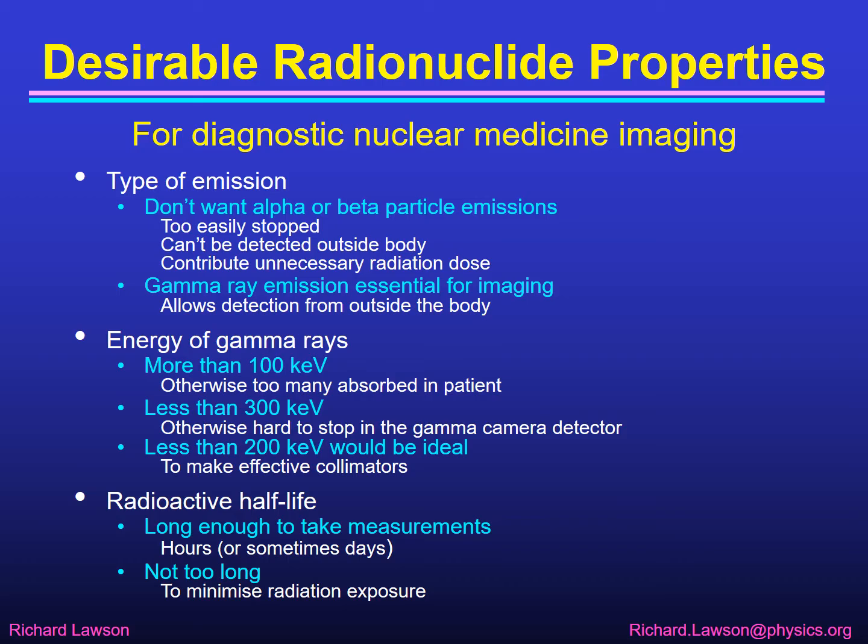The radioactive half-life is also important. It needs to be long enough to take the measurements — usually that means a few hours. It needs enough time to prepare the radionuclide into a pharmaceutical, administer it to the patient, and get the images that we need. For some tests we need to take measurements over several days and therefore sometimes we do want a longer half-life. But the half-life shouldn't be unnecessarily long to minimise the radiation exposure, because if the activity lasts long after we finish the pictures then we're giving the patient an unnecessary radiation dose. So we need to keep the half-life as short as possible.